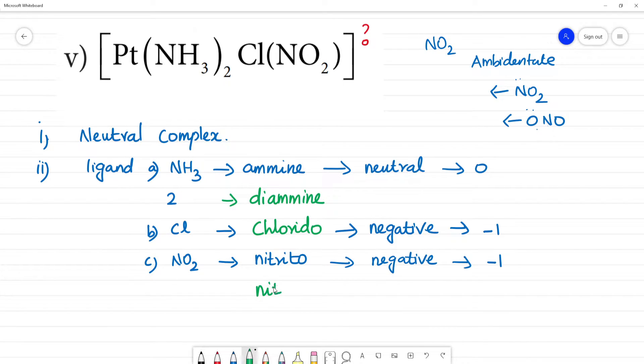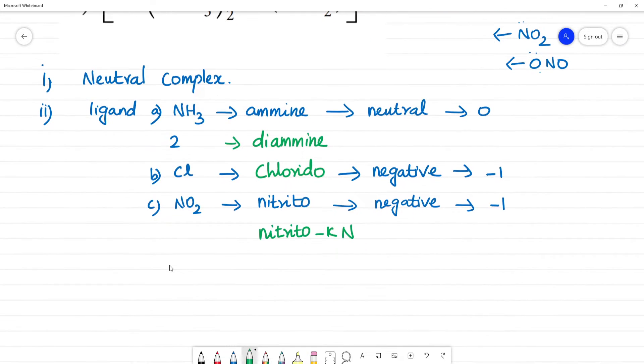How do we name this? When nitrito linkage is with nitrogen, nitrogen is linked to the central metal atom. Now we have three ligands. When we name them, we should use alphabetical order. In alphabetical order, which is important to consider? When considering di, tri, it's not considered. A comes first. A, C, N.